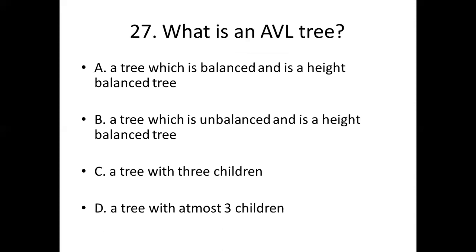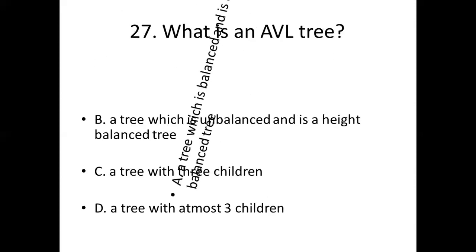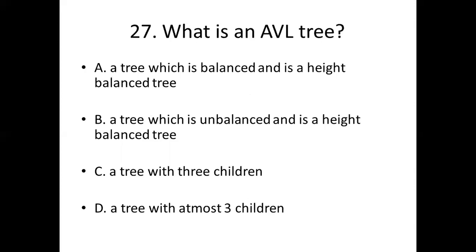Twenty-seventh bit. What is an AVL tree? Option A, a tree which is balanced and is a height-balanced tree. Option B, a tree which is unbalanced and is a height-balanced tree. Option C, a tree with three children. Option D, a tree with at most three children. Answer: Option A, a tree which is balanced and is a height-balanced tree.